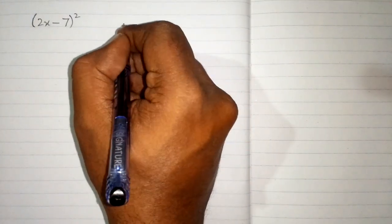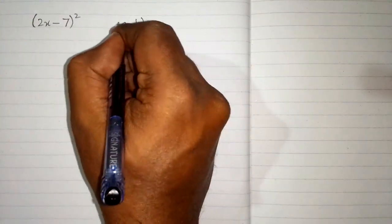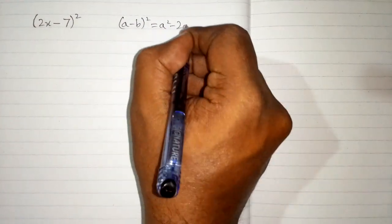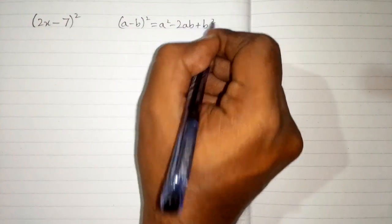In this video we will find the square of 2x minus 7. So we will use the formula a minus b whole square equals a square minus 2ab plus b square.